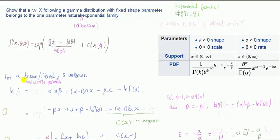If we fix the shape parameter so it's known, it's not something to estimate — some places call that a nuisance parameter — so only beta is unknown. What we want to do is rewrite this pdf in exponential family format. Rather than writing x on every line, let's work with the log. Taking the log of f gives us this expression, and then all we're going to do is match this to the exponential family form.